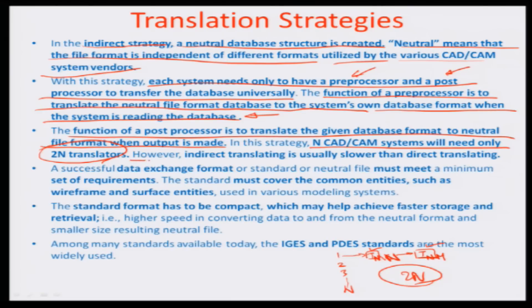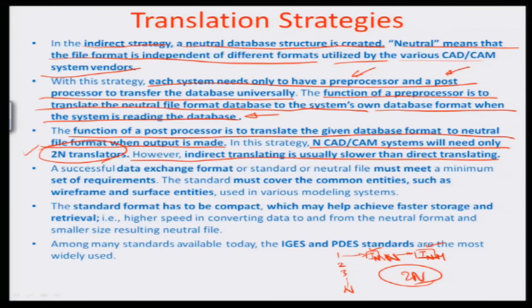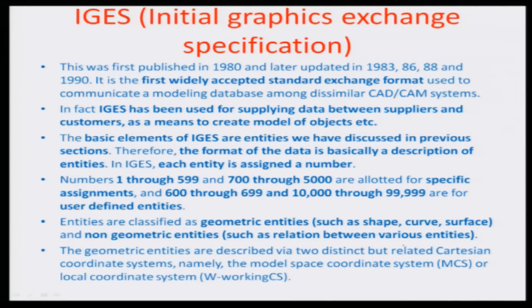However, because every conversion must go through the neutral format, there is a speed issue — time is a critical aspect in such translating strategies, and neutral translation is much slower than direct translation. If there were a dedicated translator sending data directly from one system to another, that would be a much faster process. Nevertheless, having only 2n translators is a shorter number, and this is more beneficial overall. Looking at neutral data exchange standards available in the industry for compact and faster storage, two or three such formats exist between all the different processors.